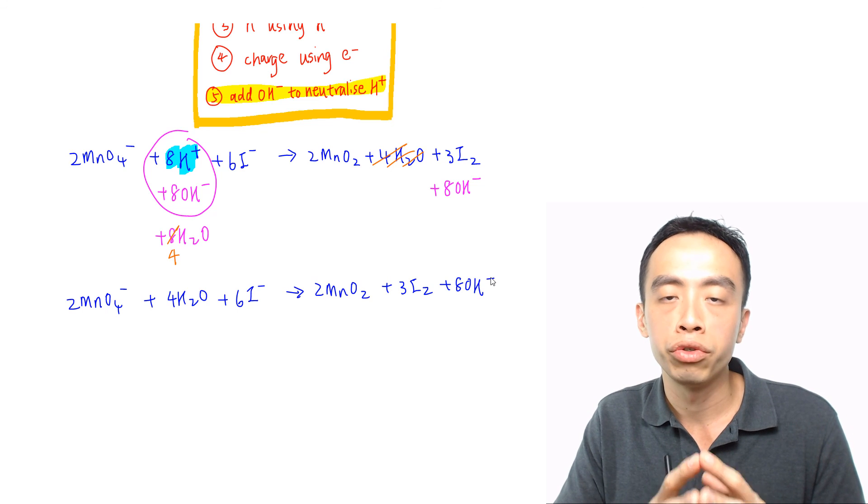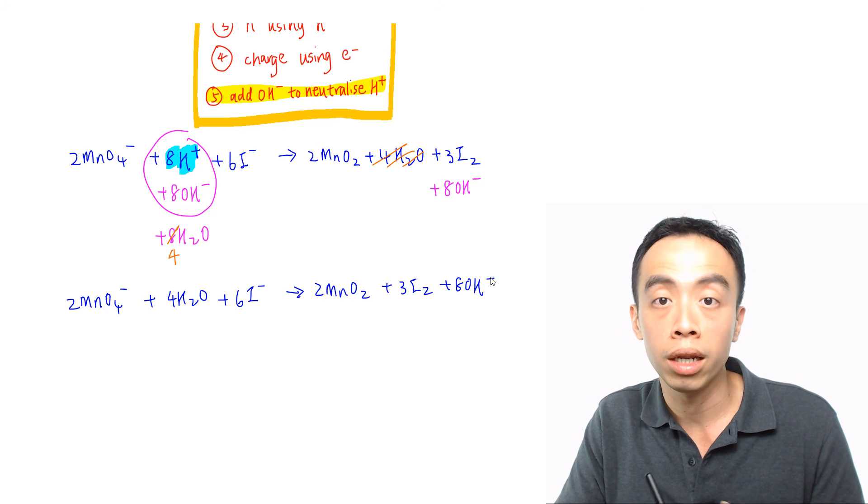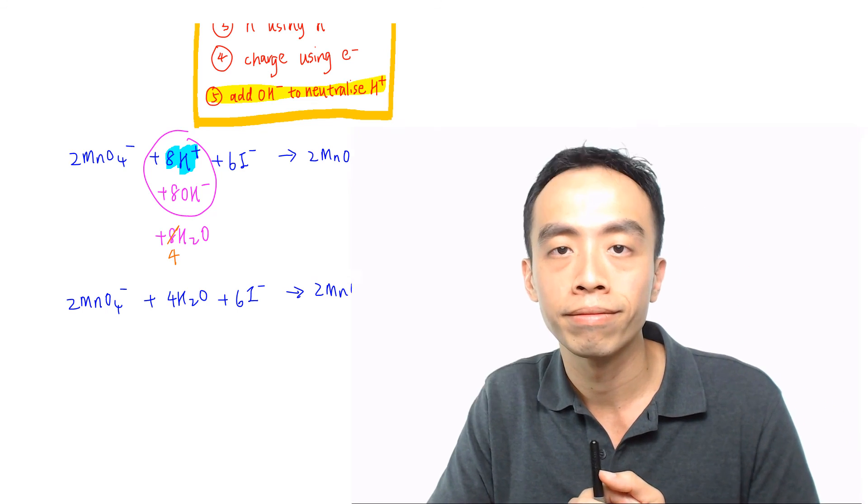So this is the redox equation in alkaline medium. This is how we balance a redox equation using the half equation method in both acidic and alkaline medium. Please subscribe to my YouTube channel for more weekly video lessons. That's all for this video — I'll see you next time.